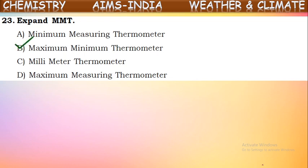Next question: expand MMT. MMT is a short form. The full form is maximum-minimum thermometer. This is the instrument used to measure the highest and lowest temperatures of a place. Maximum-minimum thermometer is the full form of MMT.